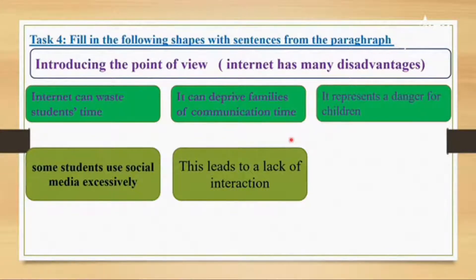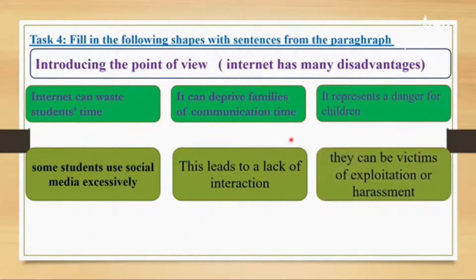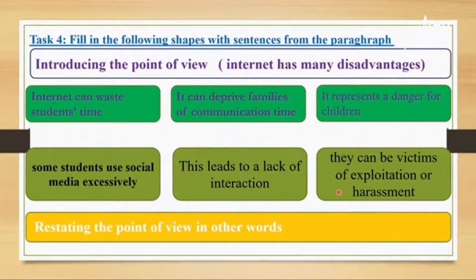The next supporting sentence is: 'It represents a danger for children.' The seventh sentence is another detail explaining this: 'They can be victims of exploitation or harassment.' The last sentence is the concluding sentence, restating the point of view. So we have: topic sentence, supporting sentence one with detail, supporting sentence two with detail, supporting sentence three with detail, and the concluding sentence.